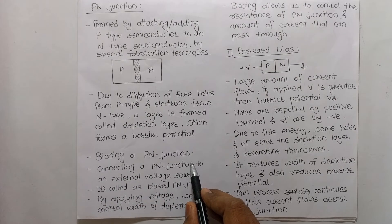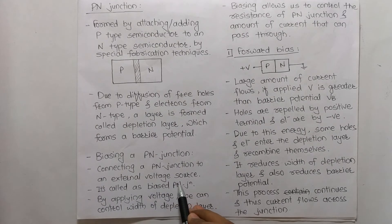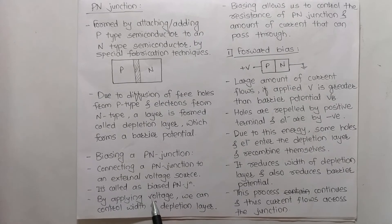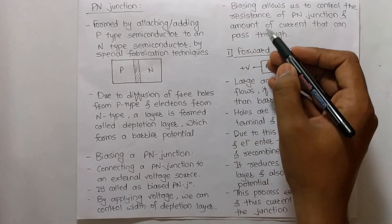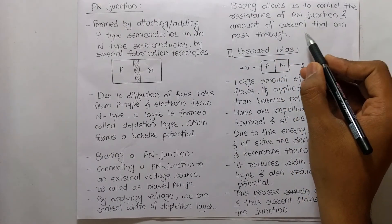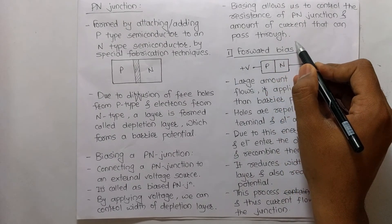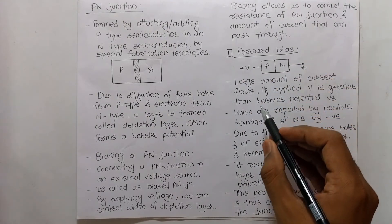Now we will see biasing of a P-N junction. Connecting a P-N junction to an external voltage source is called biasing, and the junction is then called a biased P-N junction. By applying voltage we can control the width of the depletion layer. Biasing allows us to control the resistance of the P-N junction and the amount of current that can pass through it. There are two types: forward bias and reverse bias.